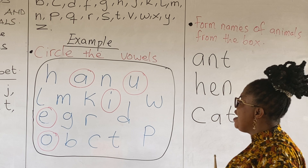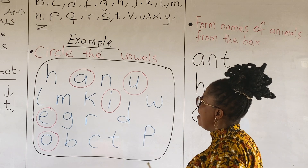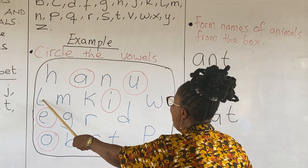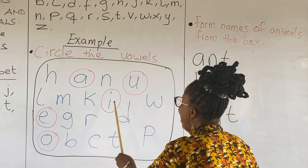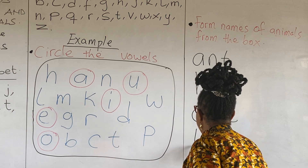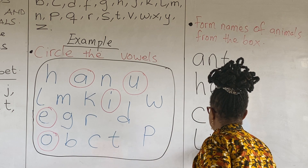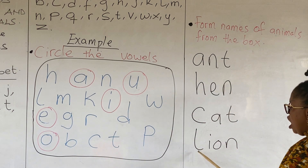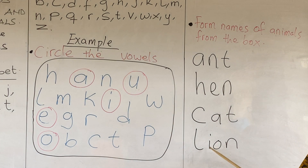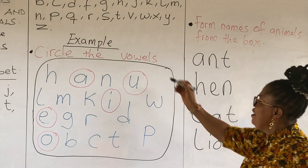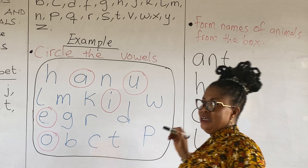Let's look for another name of an animal. We have L, I, O, N — lion. Which is consonant, vowel, vowel, consonant. So within this grid, we have a lot of names of animals inside.